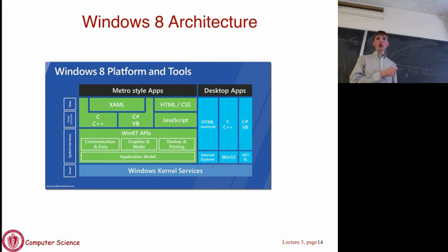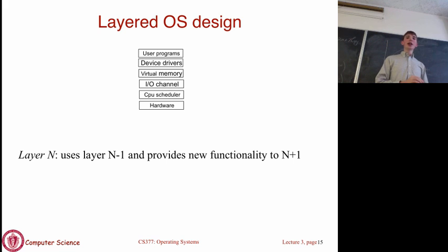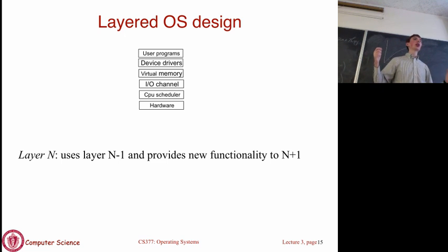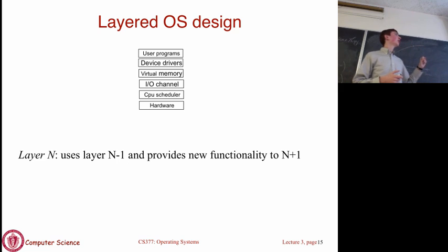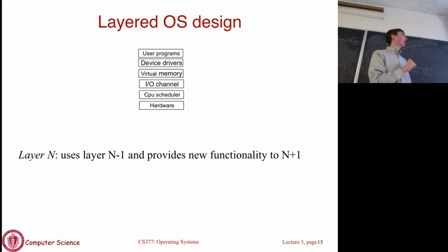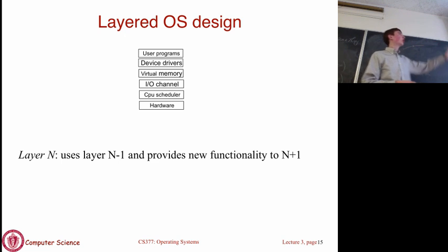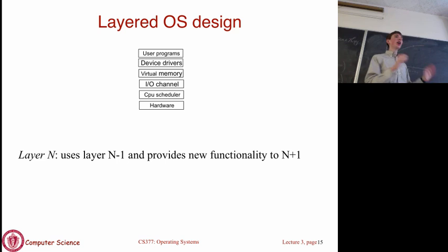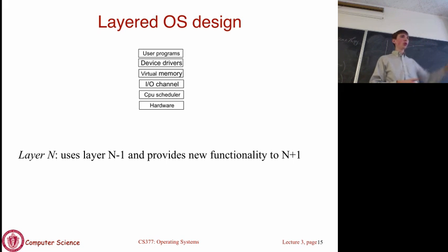The next OS design is called a layered OS design. In a monolithic kernel, you have one big box where everything can talk to everything else. In the layered approach, we take the pieces of the OS and arrange them in layers, where each layer only talks to the layer beneath it and the layer above it. For example: the CPU scheduler talks directly to the hardware; the I/O channel talks to the CPU scheduler but not the hardware directly; and so on.